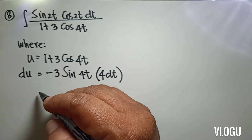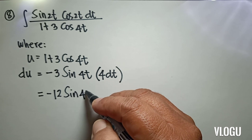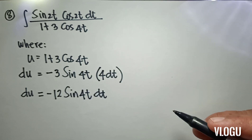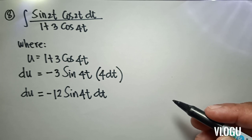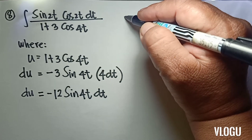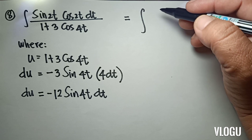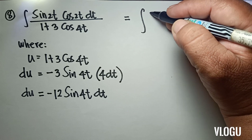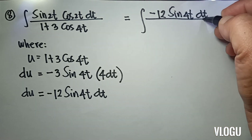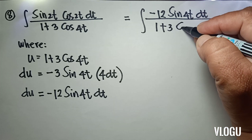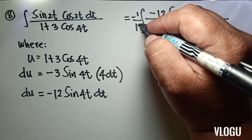Therefore, du equals negative 12 sin(4t) dt. We write the integral with du equal to negative 12 sin(4t) dt in the numerator over 1 plus 3 cos(4t). We multiply negative 12, so we multiply negative 1/12 outside.